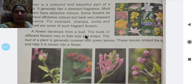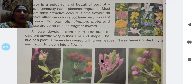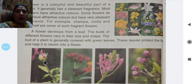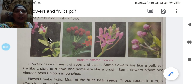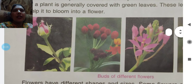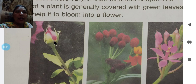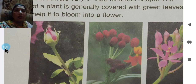Different flowers have different sizes of buds. Some buds are small, some are big. Buds can be round or long in shape. The buds of a flower are covered with green leaves — just like this. These leaves protect the bud and help it to bloom into a flower.